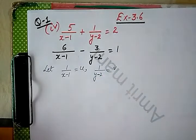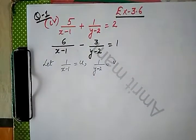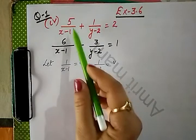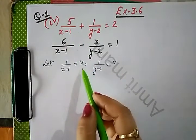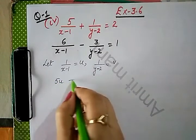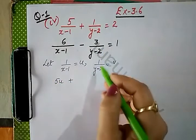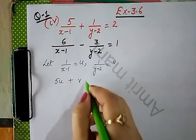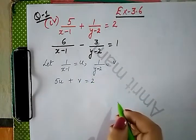You can assume using any variable, jo aapko achha lage variable, aap choose kar sakti hai. Now, in place of 1 by x minus 1 we can use u, so first this will become 5u plus v is equals to 2.